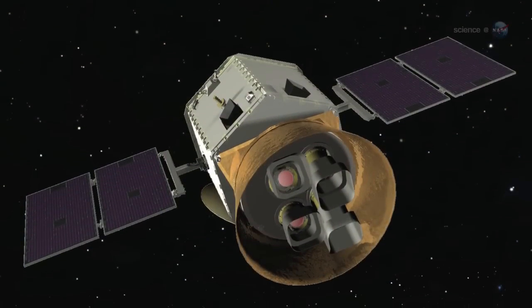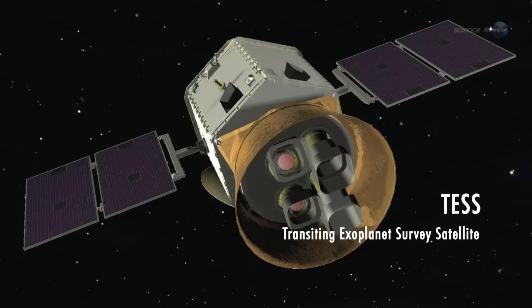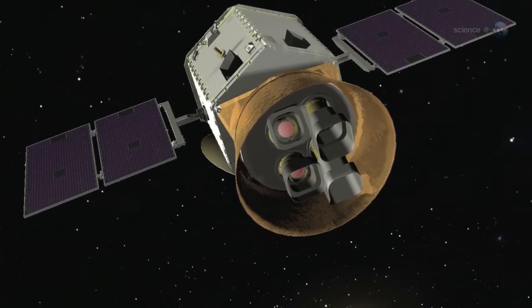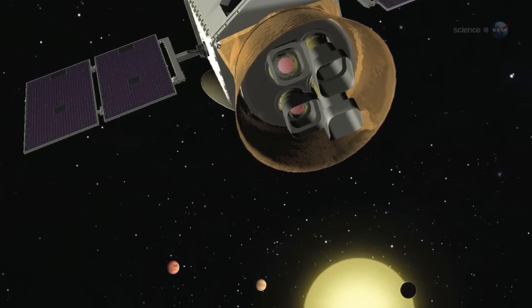NASA is also considering an observatory named TESS, the Transiting Exoplanet Survey Satellite. Supported in part by Google, the MIT-led mission is specifically designed to find exoplanets in the local galactic neighborhood. TESS would study hundreds of stars within 50 light-years of Earth, close enough to study in some detail.